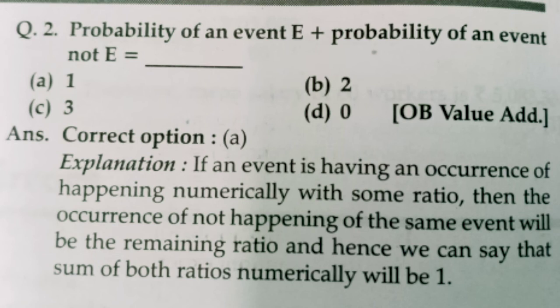Moving to question number 2. Probability of an event E plus probability of an event not E is equal to what? The answer is 1. Why? Suppose you have a coin — if you toss it, probability of getting head is 1/2, and probability of not getting head (i.e., getting tail) is also 1/2. So 1/2 plus 1/2 equals 1. In simple terms, if an event has some ratio of occurring, then the non-occurrence will have the remaining ratio, and adding both ratios gives 1.